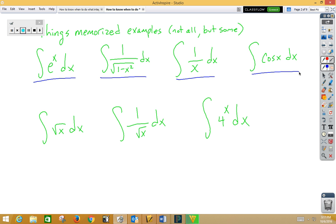Integrating cosine? Yes, sine x plus c. Root x, 2 thirds x to the 3 halves plus c. 1 over root x, 2 root x plus c. And of course, the ever-popular a to the x, which would be 1 over natural log 4 times 4 to the x plus c.